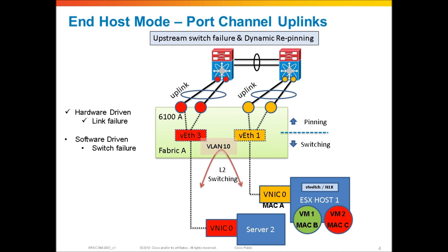Here's the same scenario again with port channel uplinks — the orange logical uplink and the red logical uplink going to separate upstream switches. If there's a physical link failure within a port channel, that's a hardware-driven process giving better and faster convergence, more resiliency, and better load balancing. However, a port channel lands on a physical switch upstream, and if you don't have any special clustering or multi-chassis EtherChannel technology on your upstream LAN — as in this basic LAN setup — you have a potential for upstream LAN switch failures.